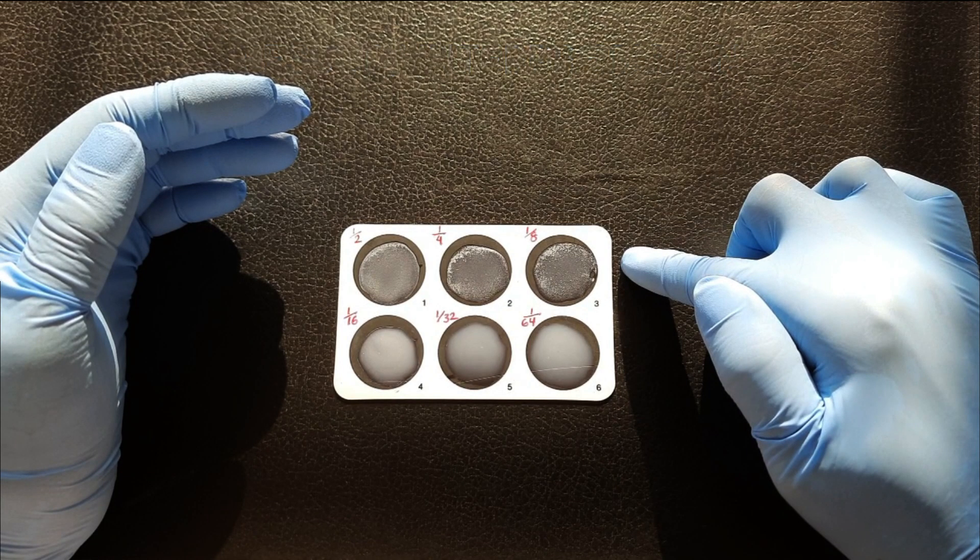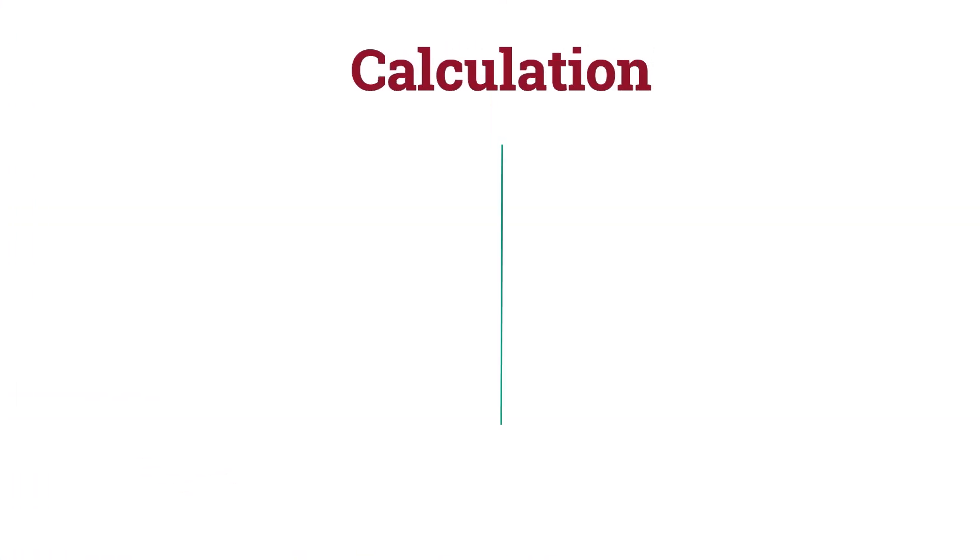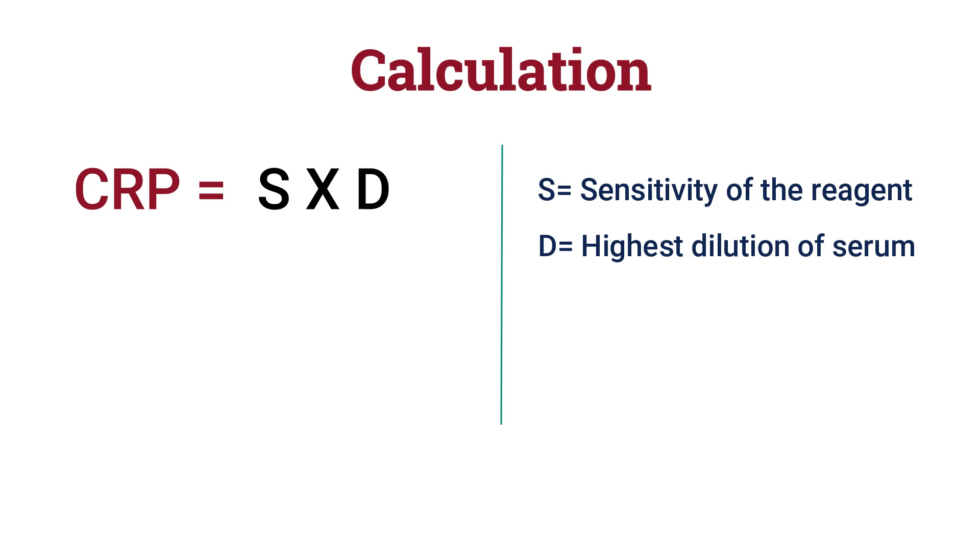Now, we will do a math to obtain the CRP level. The equation states, CRP is equal to S into D, where S means sensitivity of the reagent, that is 6 milligrams per liter, and D means the highest dilution of serum showing agglutination. So, in this case, we found the CRP level is 48 milligrams per liter.